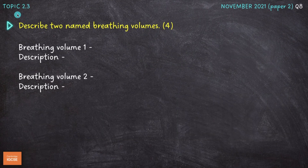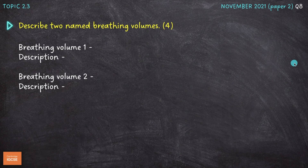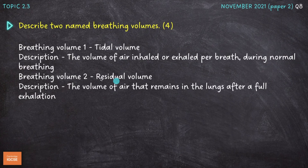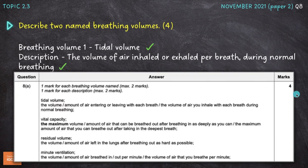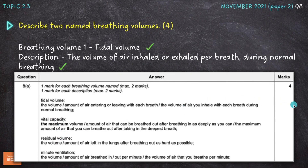Next question is on topic 2.3: describe two named breathing volumes. We get two marks for naming two breathing volumes and two marks for appropriate descriptions. I've gone for tidal volume and residual volume. Tidal volume is the volume of air inhaled or exhaled per breath during normal breathing — it's important to include 'during normal breathing.' Residual volume is the volume of air that remains in the lungs after a full exhalation. The mark scheme shows names and descriptions of all four breathing volumes.